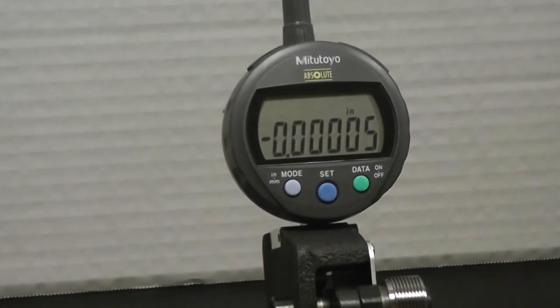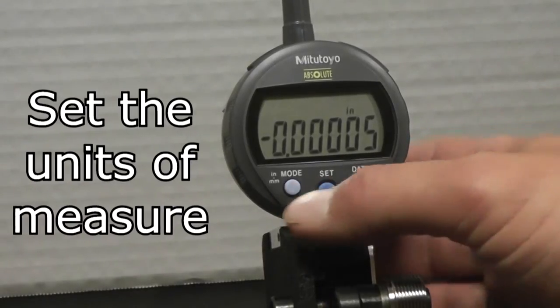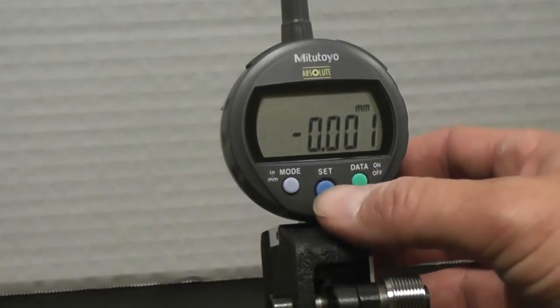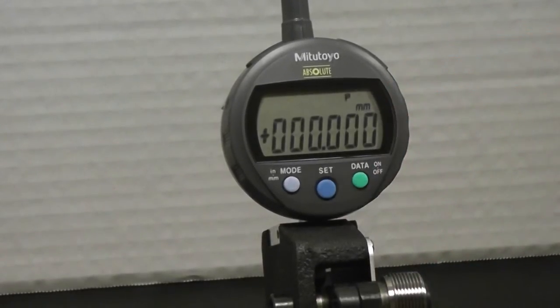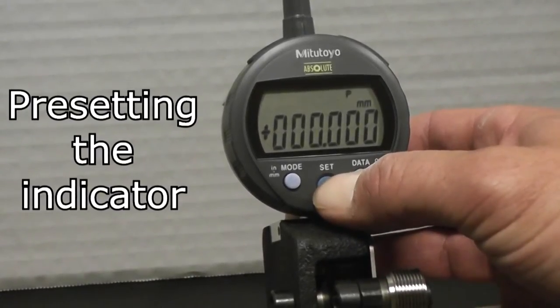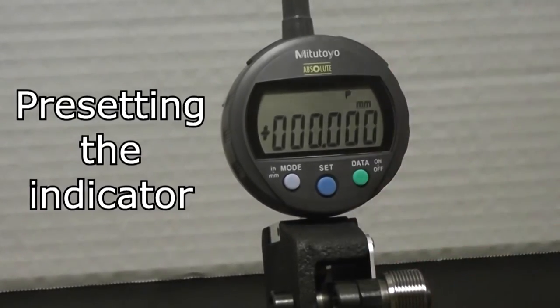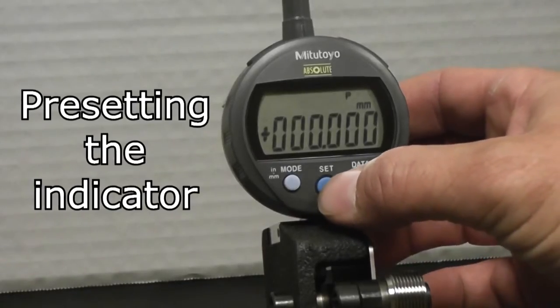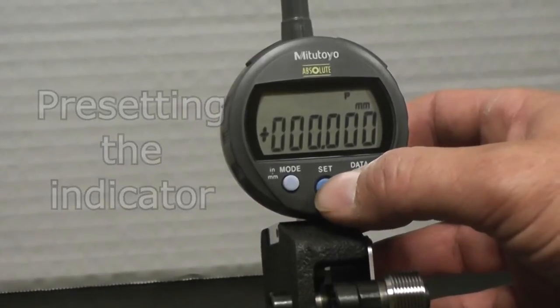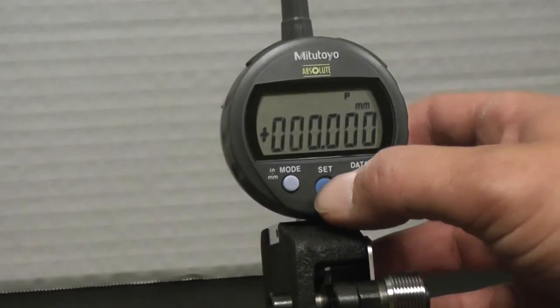But what we want to do, we're measuring in millimeters right now, so that's what our preset is going to be. So we want to change our units by hitting the mode button once over the millimeters. At that point, you want to hit your set button, so your little P is flashing at the top. When you see that, you hold the set button until that plus starts flashing, then you let go. You want to set that plus to a positive, so you just hit the set button again. You want to set that zero to zero.